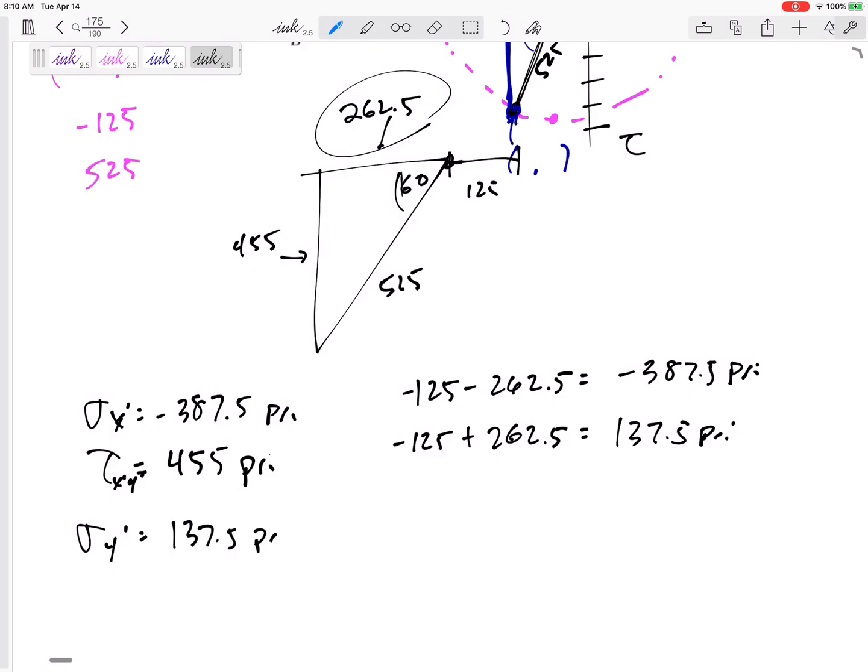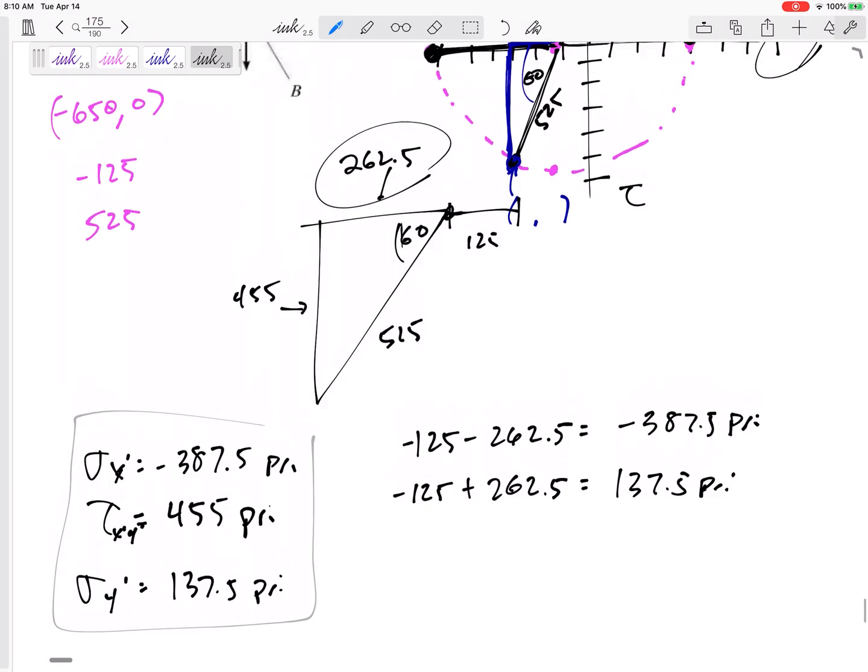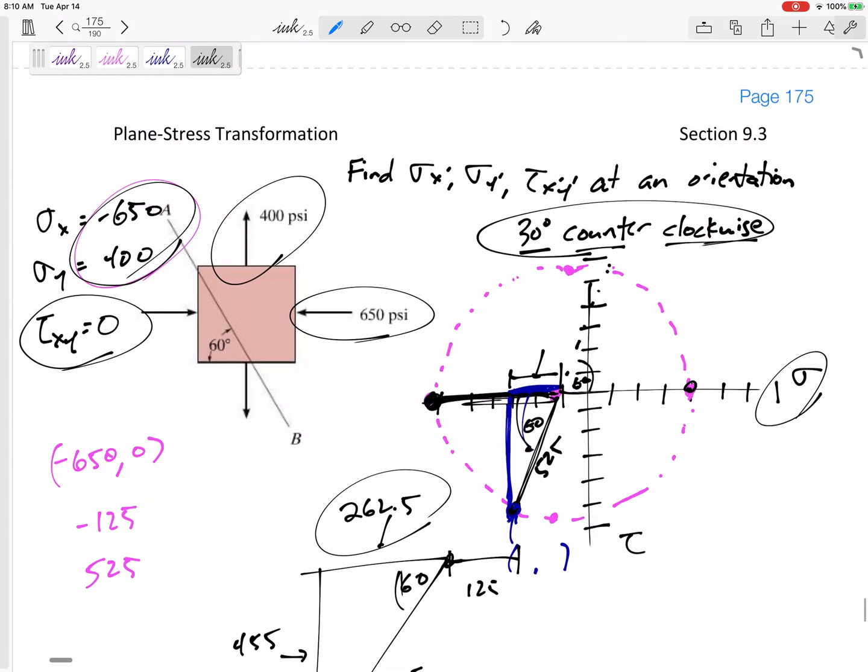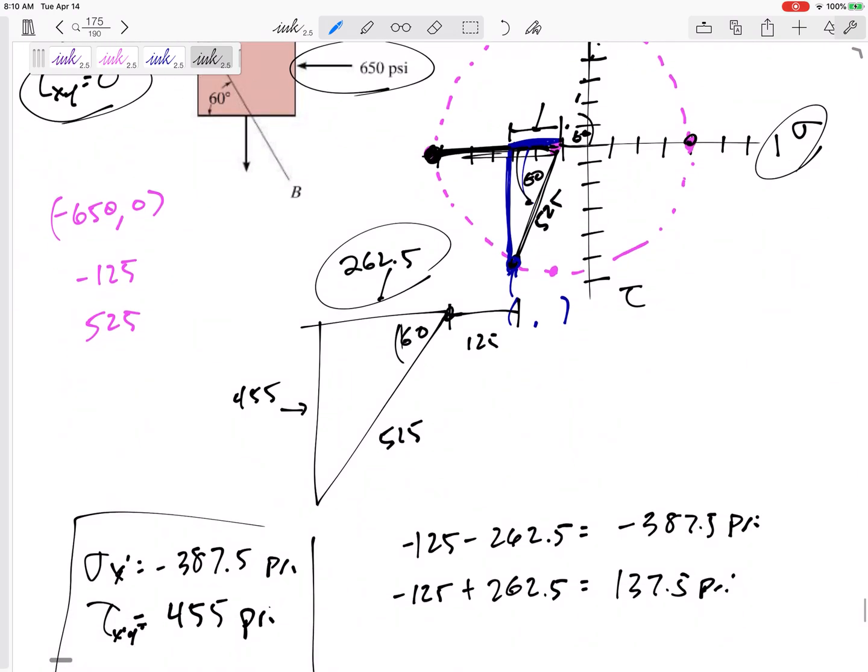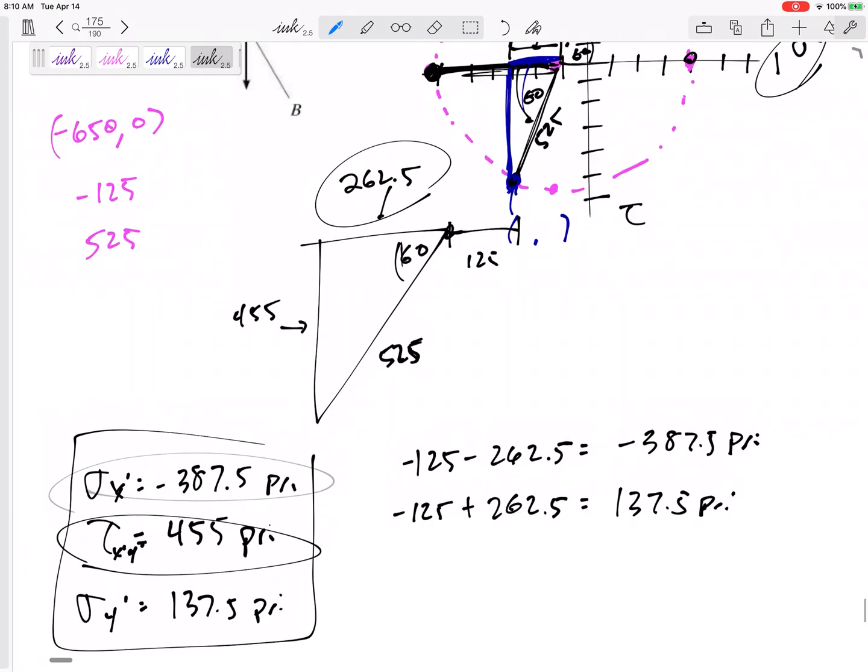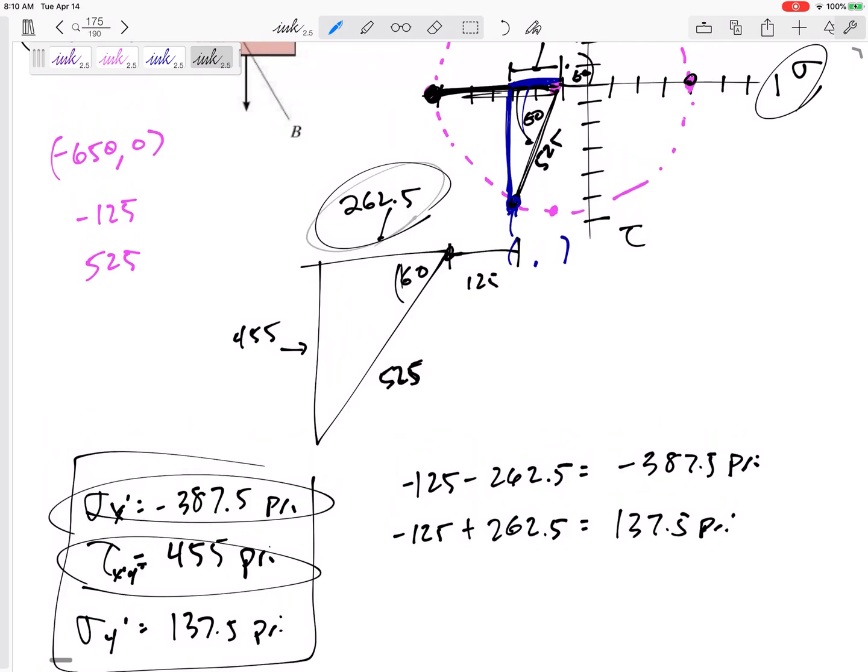137.5 psi. So this was easier because I started at this zero. So when I wanted to go 30 degrees counterclockwise, I went 60 degrees counterclockwise on Mohr's circle. So I got at this triangle of 60 degrees, and that still has the same hypotenuse that was the radius. Then I can find the tau, and then be careful with this normal stress. The base is not the normal stress.